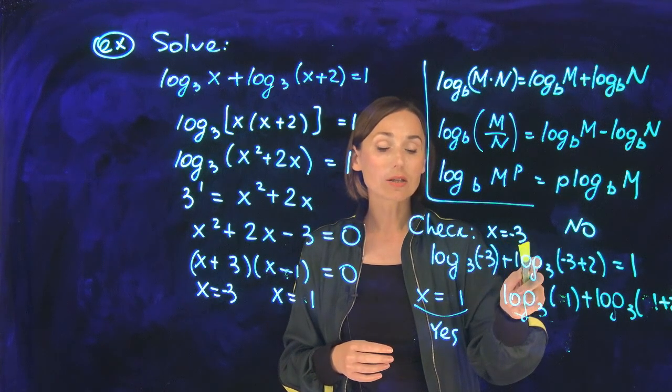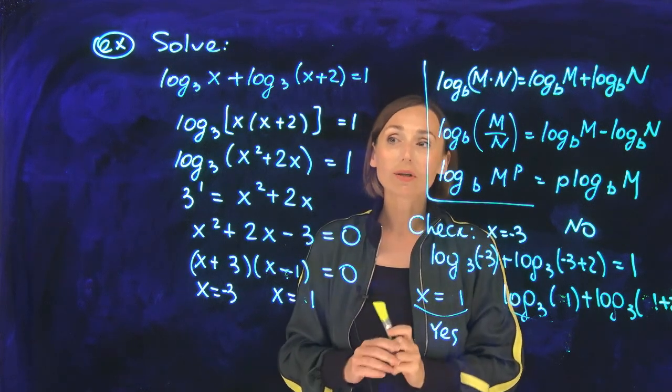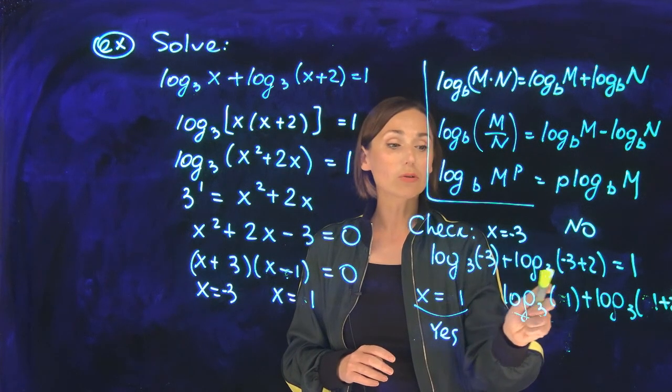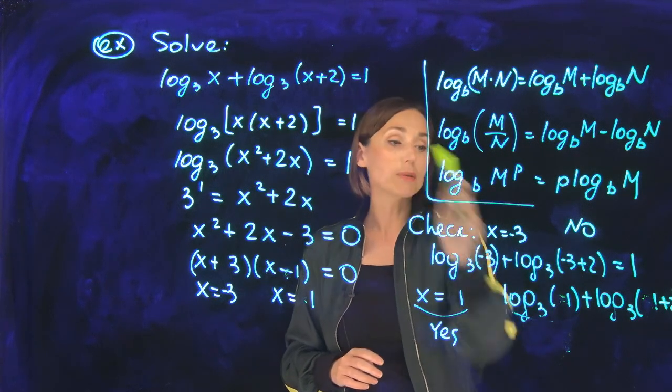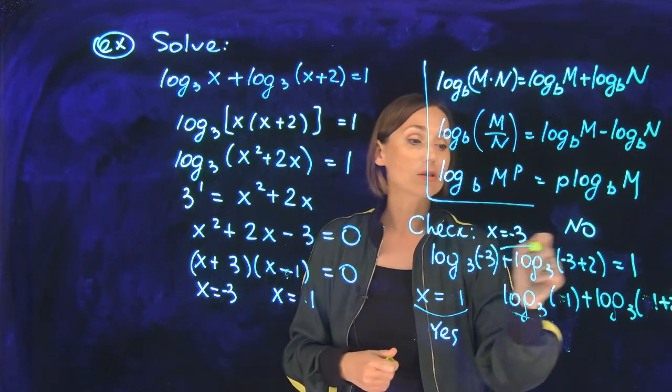If you check x = -3, you plug it into the original equation, always the original. Log base 3 of (-3) plus log base 3 of (-3 + 2) equals 1. But log base 3 of (-3) does not exist.